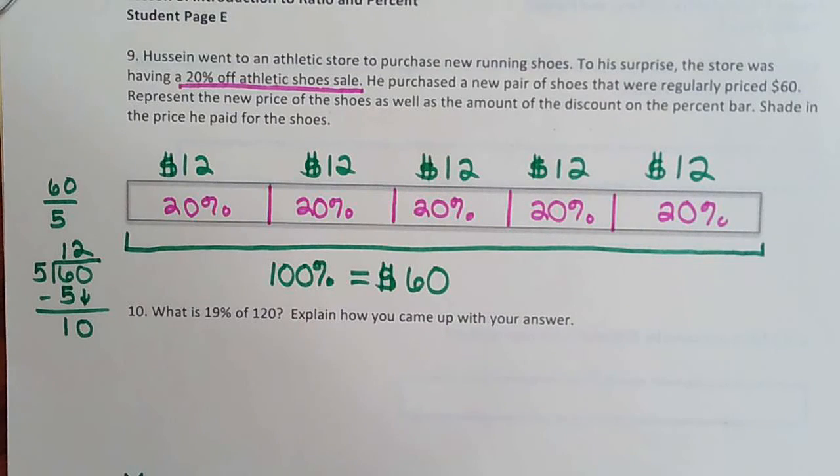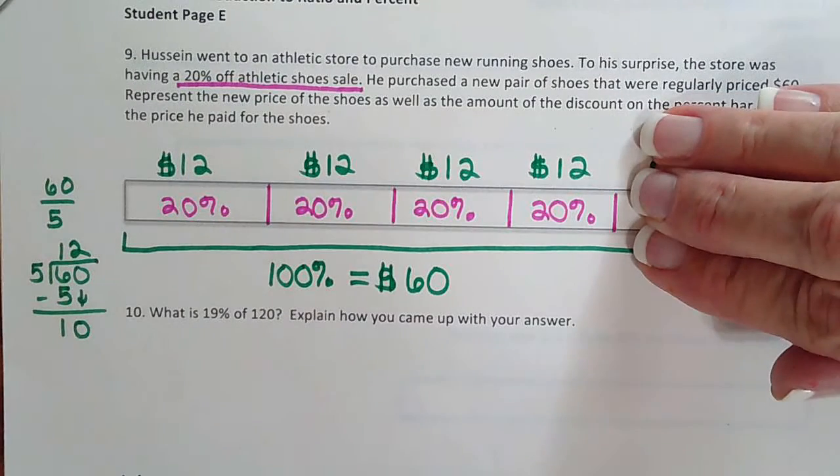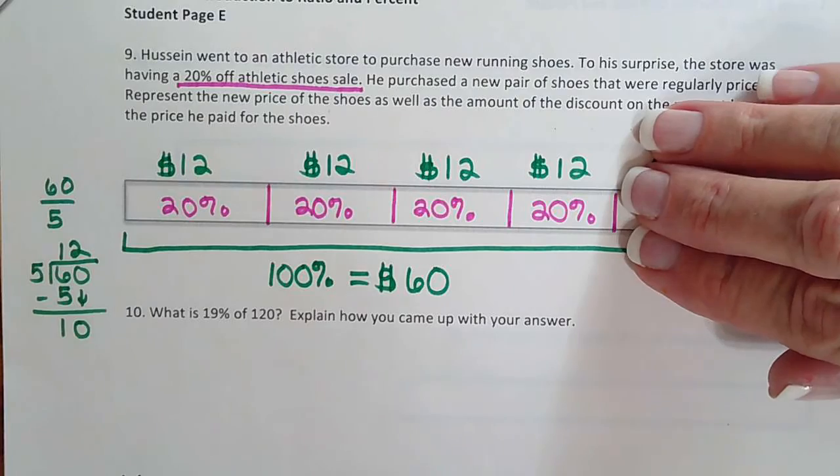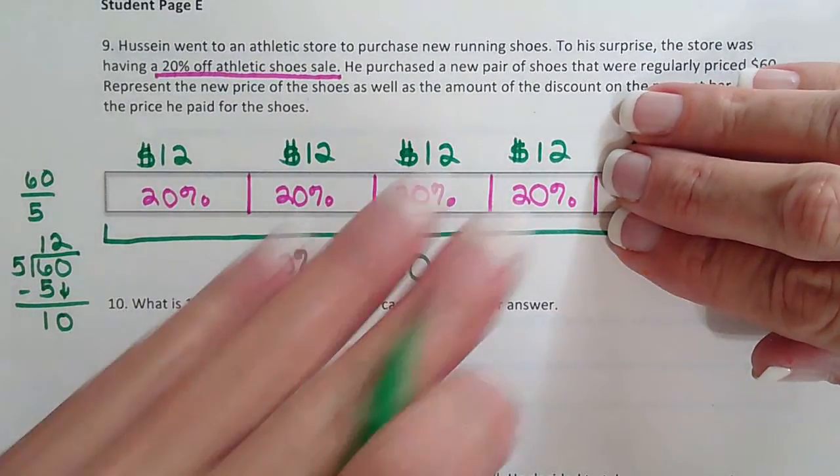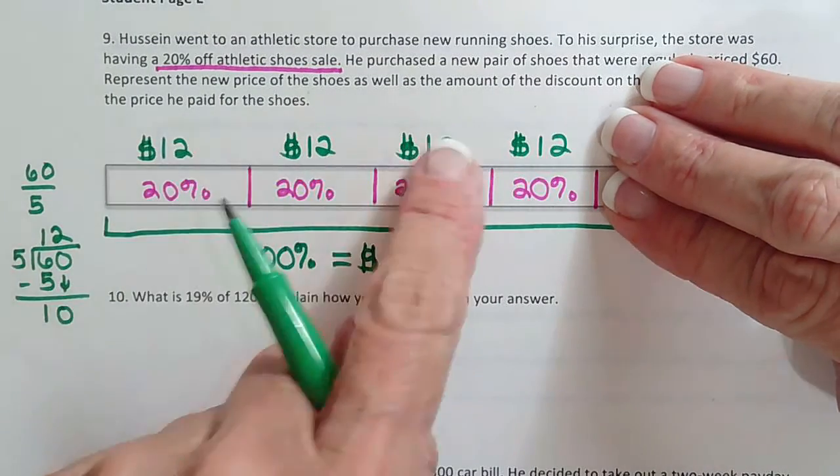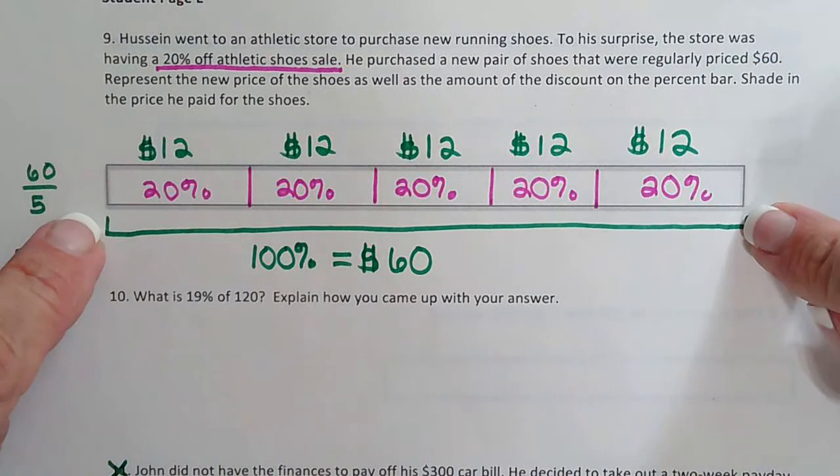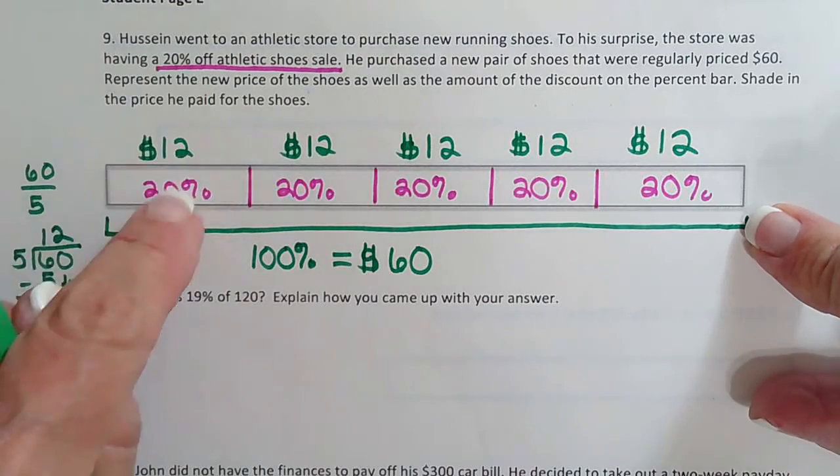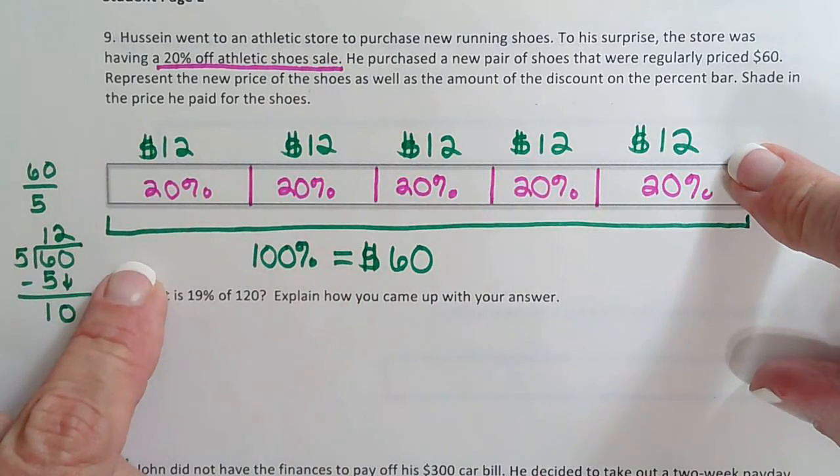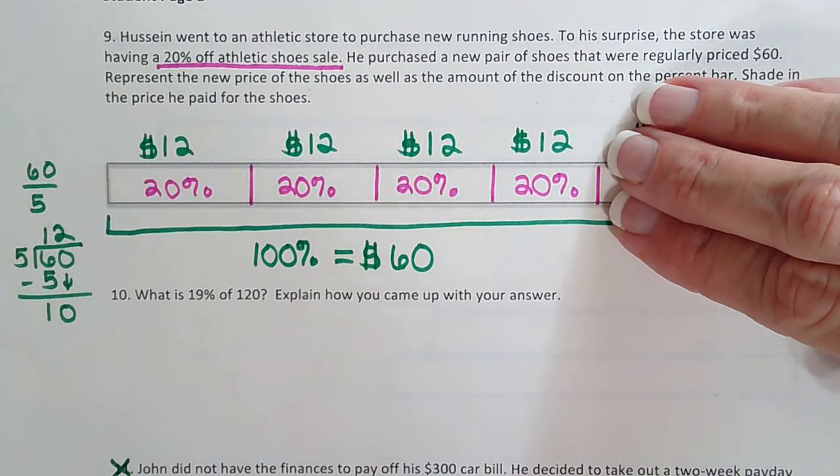So look how easy it's going to be to figure out what he paid now. So 12 times 5 is 60. He got 20% off. So he paid 12 times 4. So if they said on the test, what is the discount? You'd say $12. If they said, what is the sale price? You'd say 12 times 4, $48. So everything can be read from the picture. The entire price is $60. But because 20 goes into 100 5 times, we divide it by 5. So each piece is $12. Discount. Price he paid. Awesome!